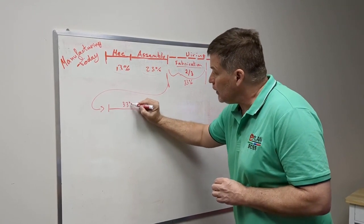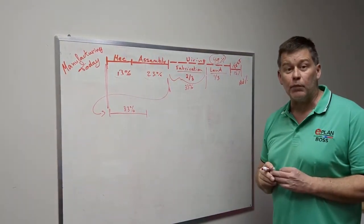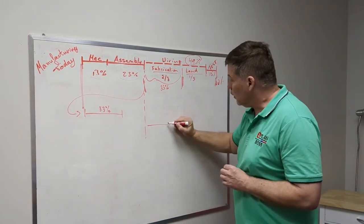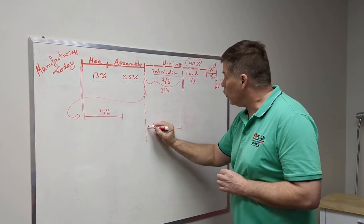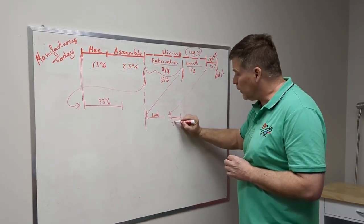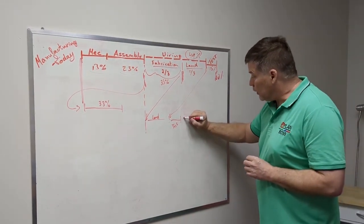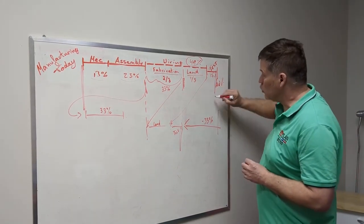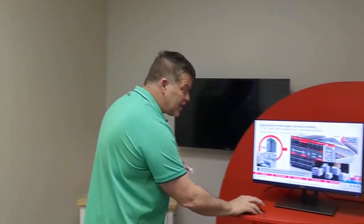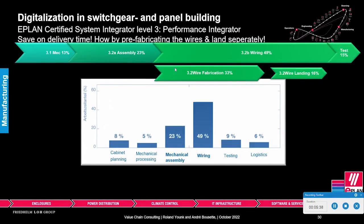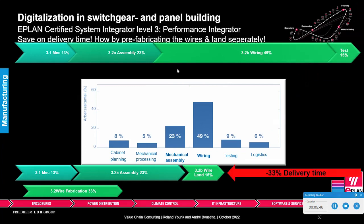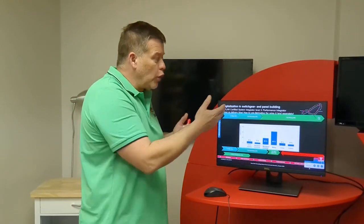That 33% can be done at the same time as you start your mechanical assembly. You can take the landing and the testing and run those in parallel. Pre-fabricated wires — lambda wires — come from the wire fabrication stage, and testing goes in alongside. That actually means your delivery time is now shortened by minus 33%. You achieve this simply by being able to separate the wire fabrication from the wire landing — you can start wire fabrication from day one and then land it. We separate that task using smart wiring. This is our third Performance Integrator.